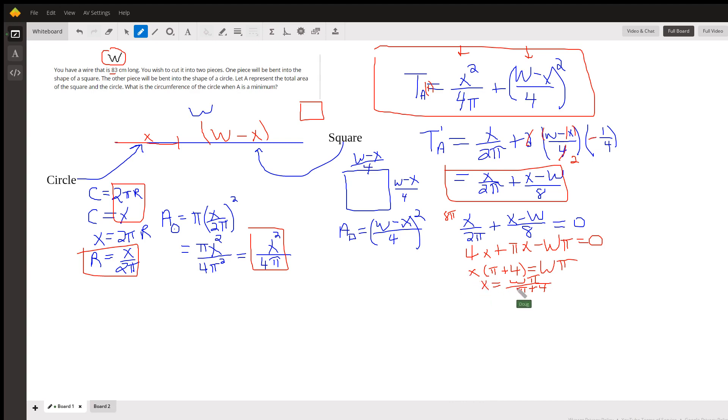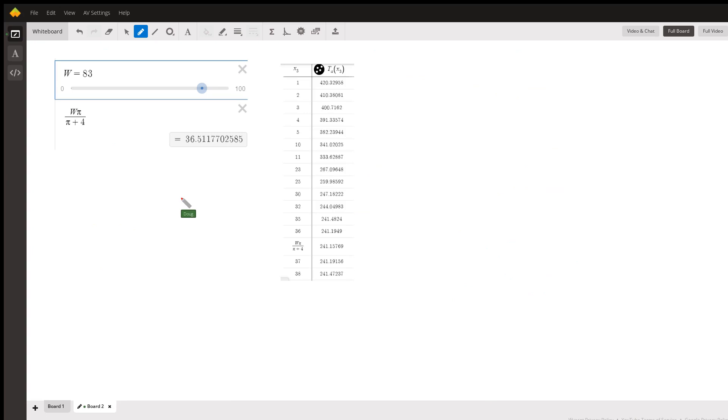Now to prove that that generates a minimum area, we'd have to use the first derivative test or the second derivative test. I'll leave that to the viewer. But here's an indication that indeed it does create a minimum. I've set W equal to 83 and evaluated Wπ over π plus 4 as 36.511.